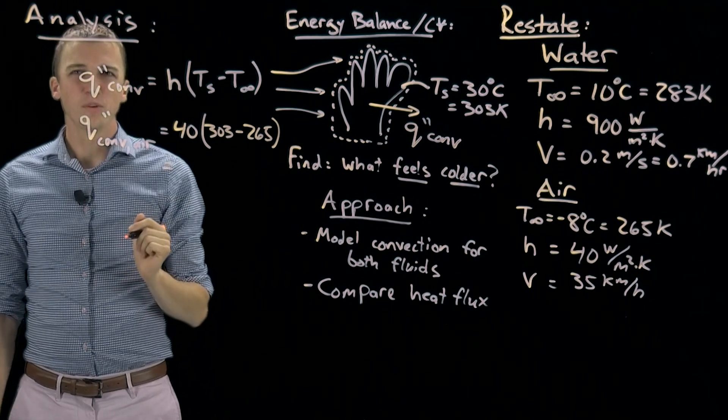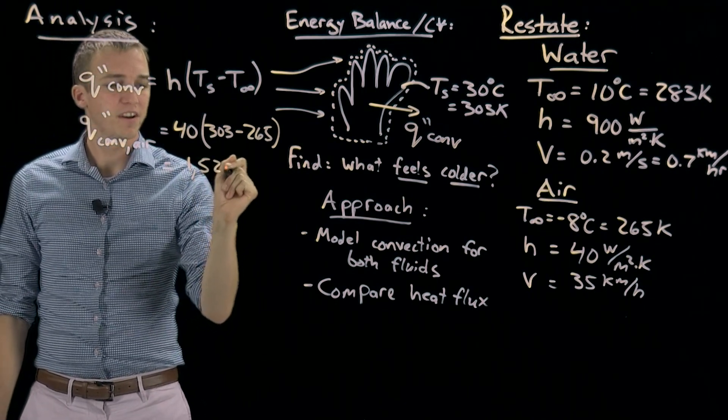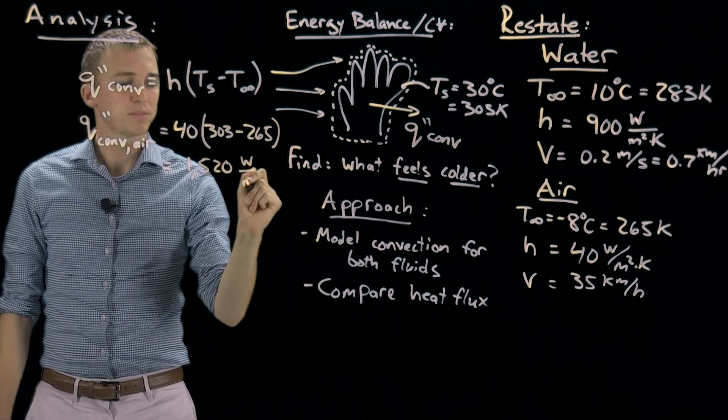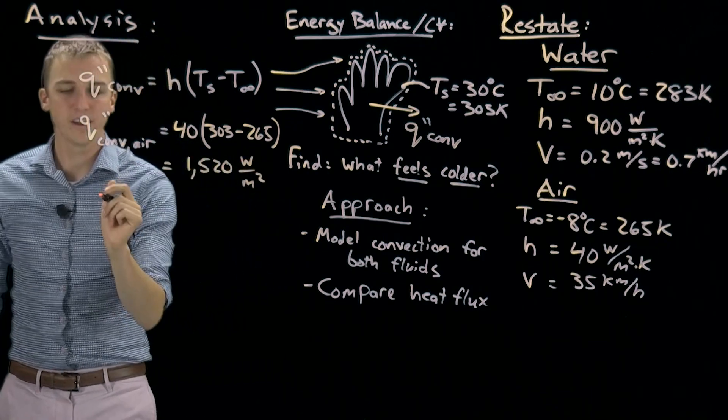Multiplying all of that out, we get 1520 watts per meter squared. Now if we do it again, but this time for water.